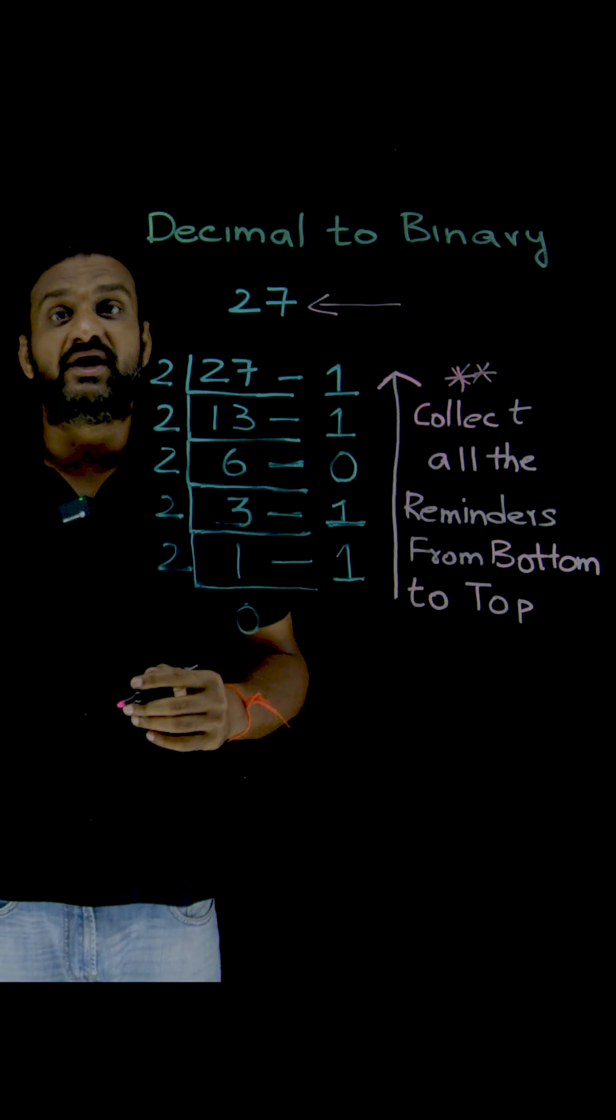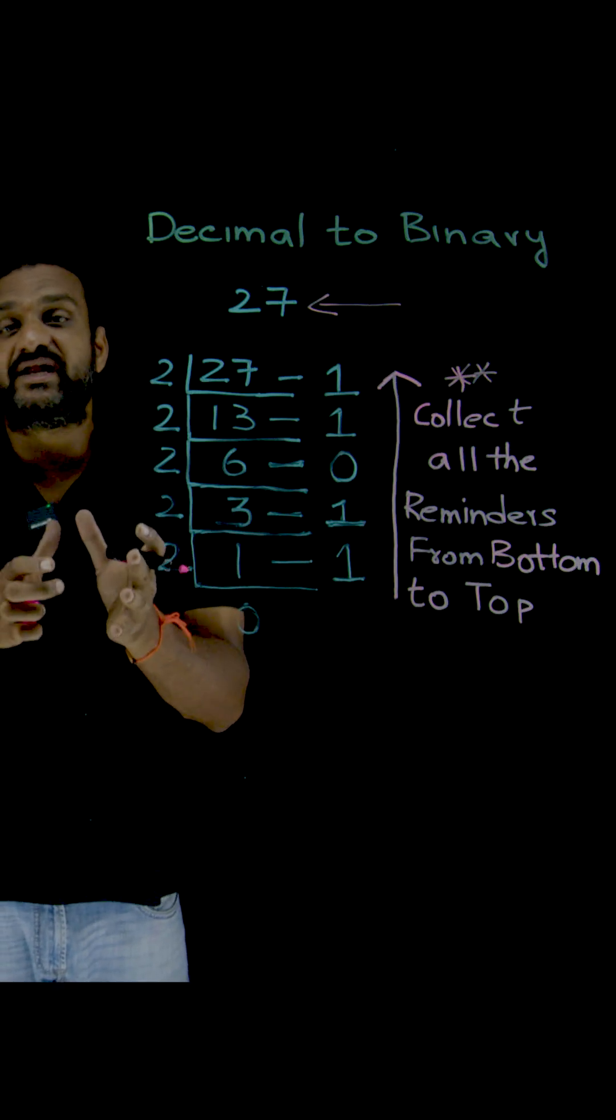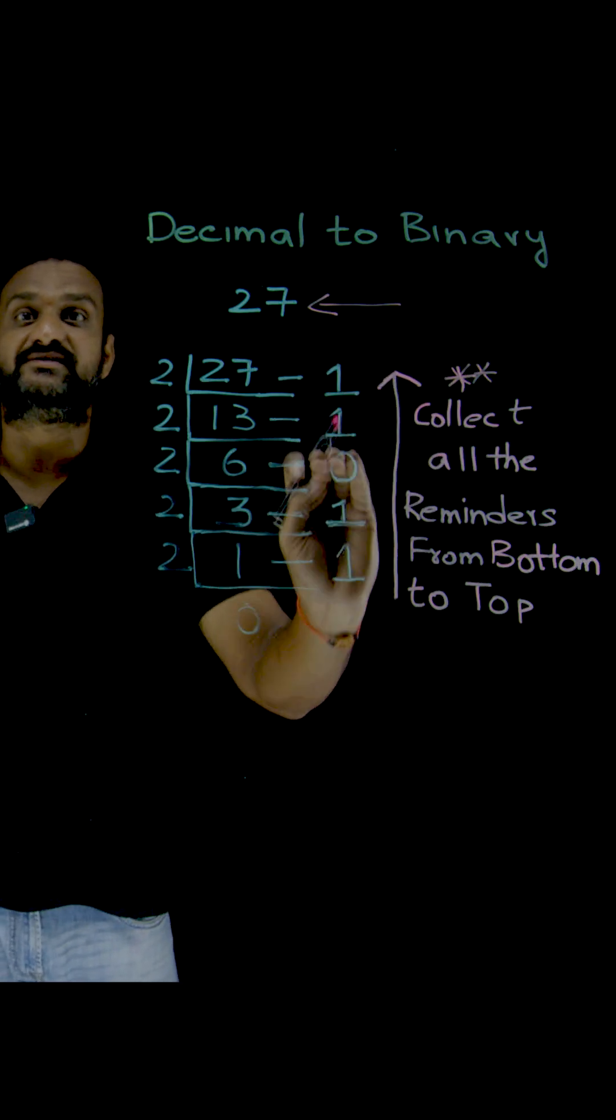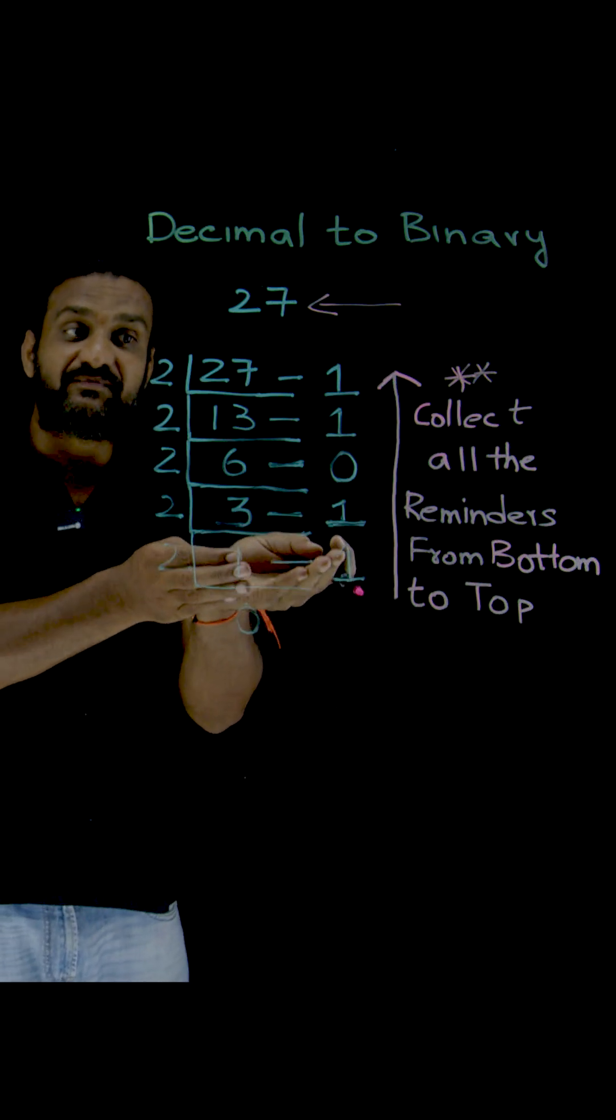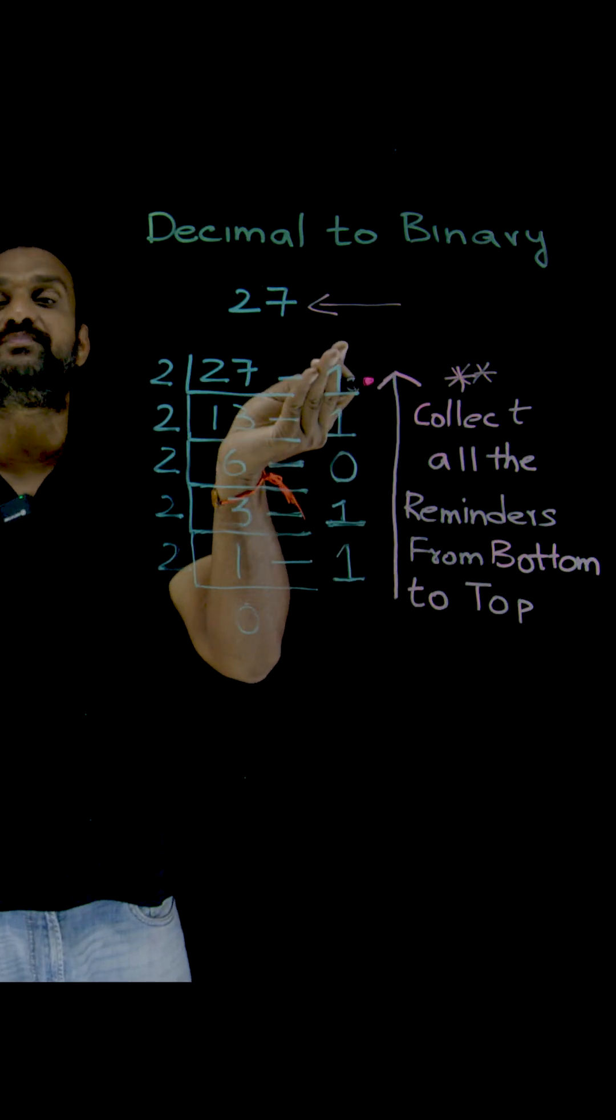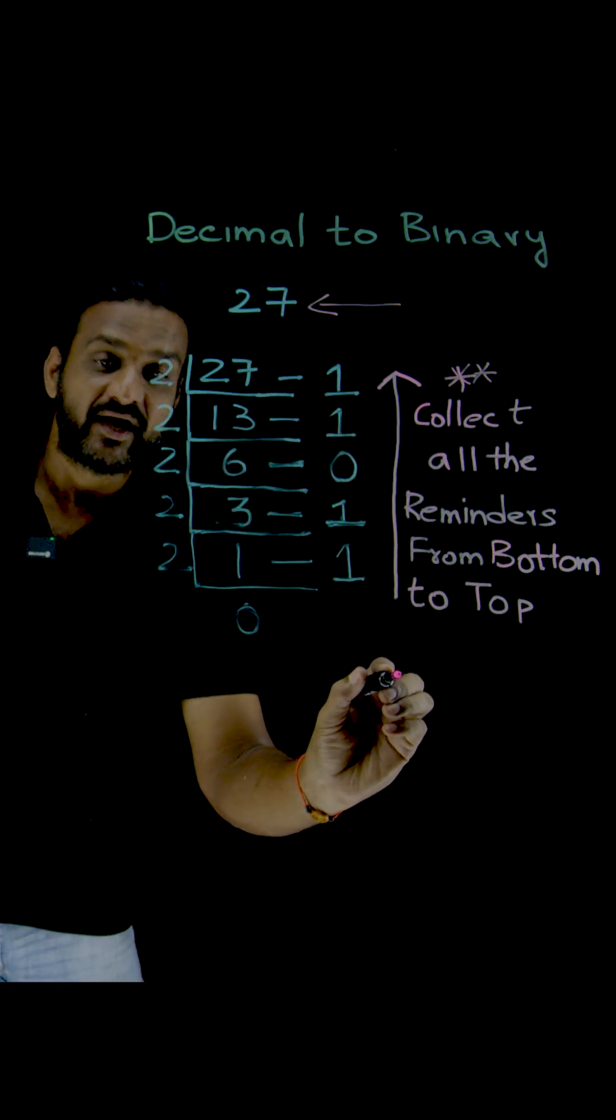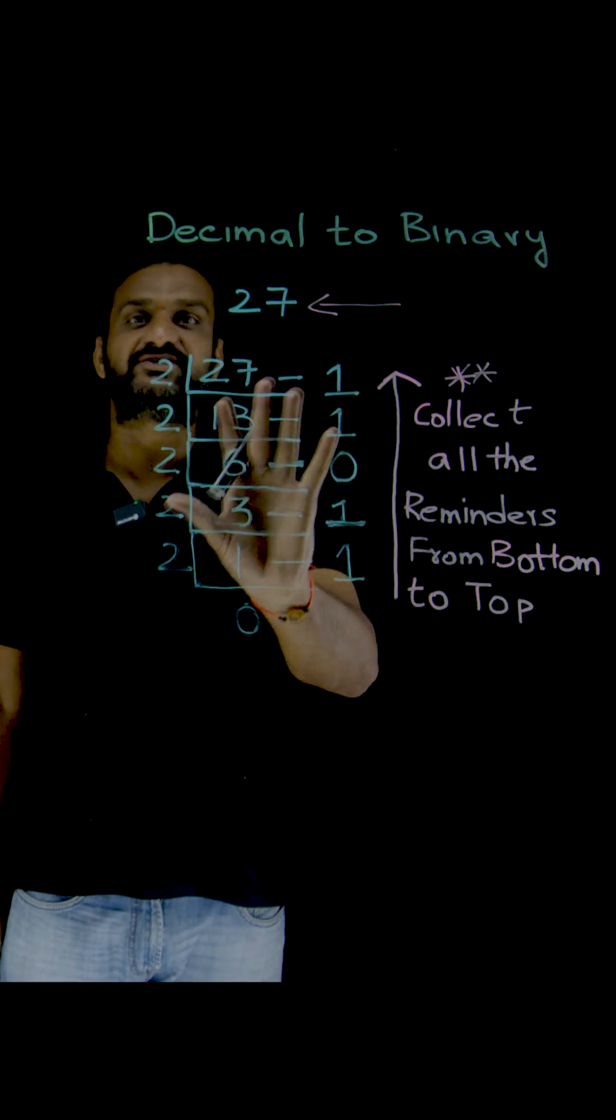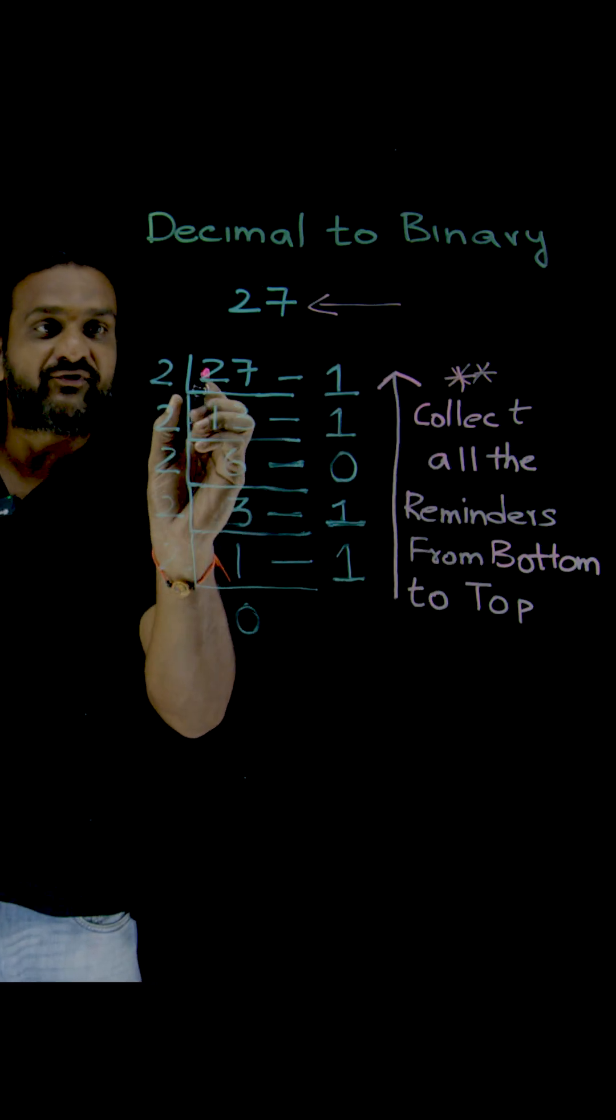While writing competitive exams we will have very less time to answer, so in such cases we will forget this. We have to collect the bits, the remainders, from bottom to top and place them from right to left. Let's see the calculation first and we'll discuss this after the calculation.